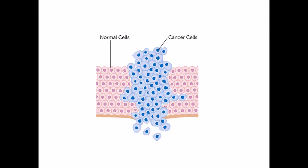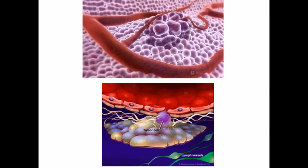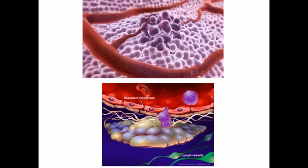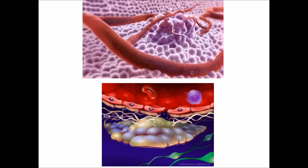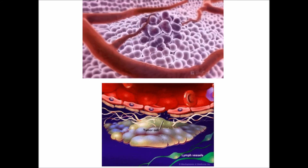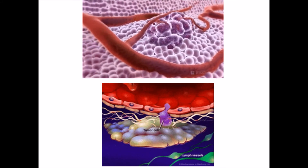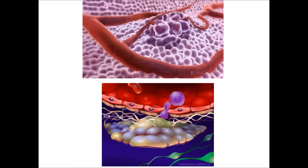These bad cells go on multiplying and after some time get separated and spread to other parts of the body, causing metastasis. Here you can see the cancer cells are continuously multiplying, and after some time they get separated from the primary site and go into the blood vessels and the lymph nodes, spreading to other parts of the body.